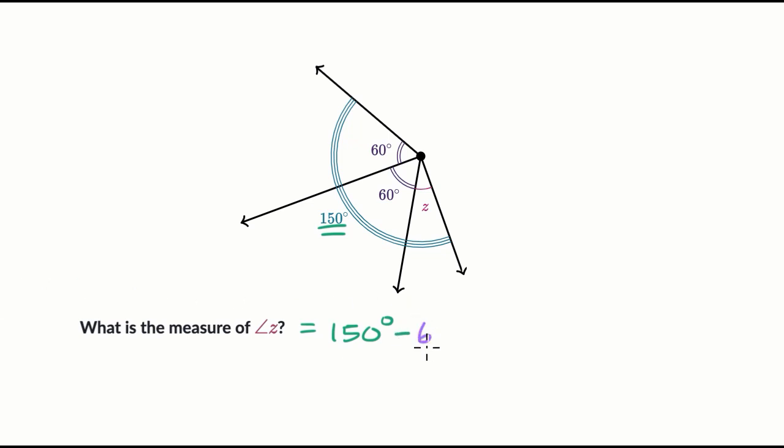So minus 60 degrees, and then minus another 60 degrees, that should give us the measure of angle z.